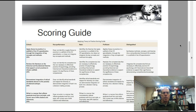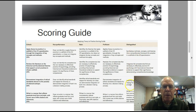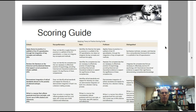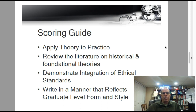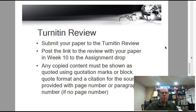This is the scoring guide. Make sure you check the scoring guide and read the distinguished criteria. This is what I'm required to use in grading your paper, so you want to look this over. The major sections in the scoring guide are: applying theory to practice, reviewing the literature on historical and foundational theories, demonstrating integration of ethical standards, and writing in a manner that reflects graduate-level form and style.